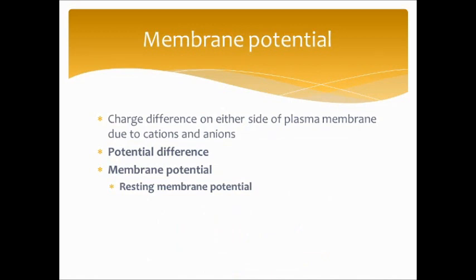Membrane potential is a charge difference in the plasma membrane due to cations and anions on either side — it has nothing to do with the cytosol or organelles specifically, just the plasma membrane. When there's a difference between these charges being kept apart, that's called the potential difference; within a plasma membrane it's called the membrane potential. When the plasma membrane is at rest, that's known as the resting membrane potential, which will come into play later when we talk about the nervous system and how it harnesses that potential for electrical energy.